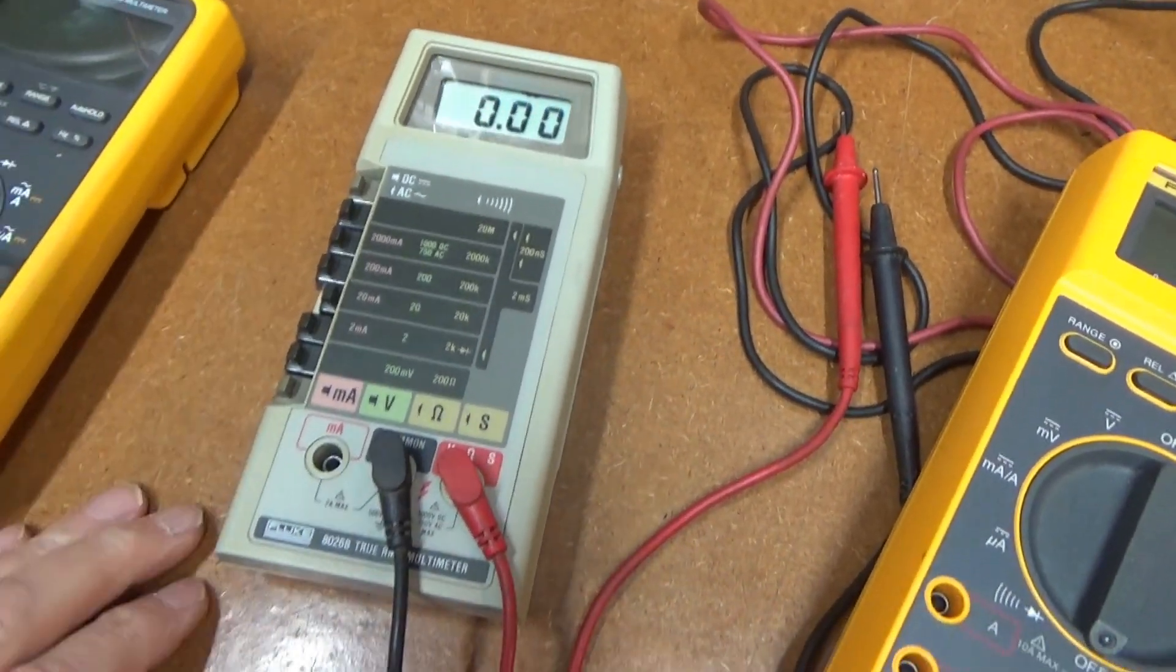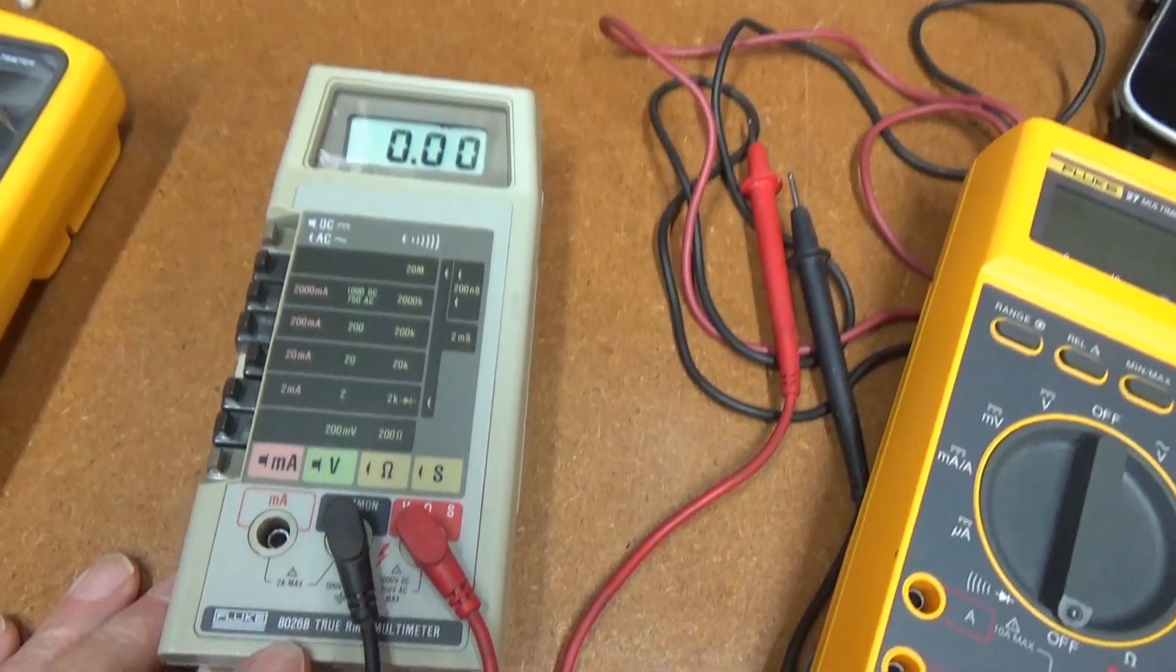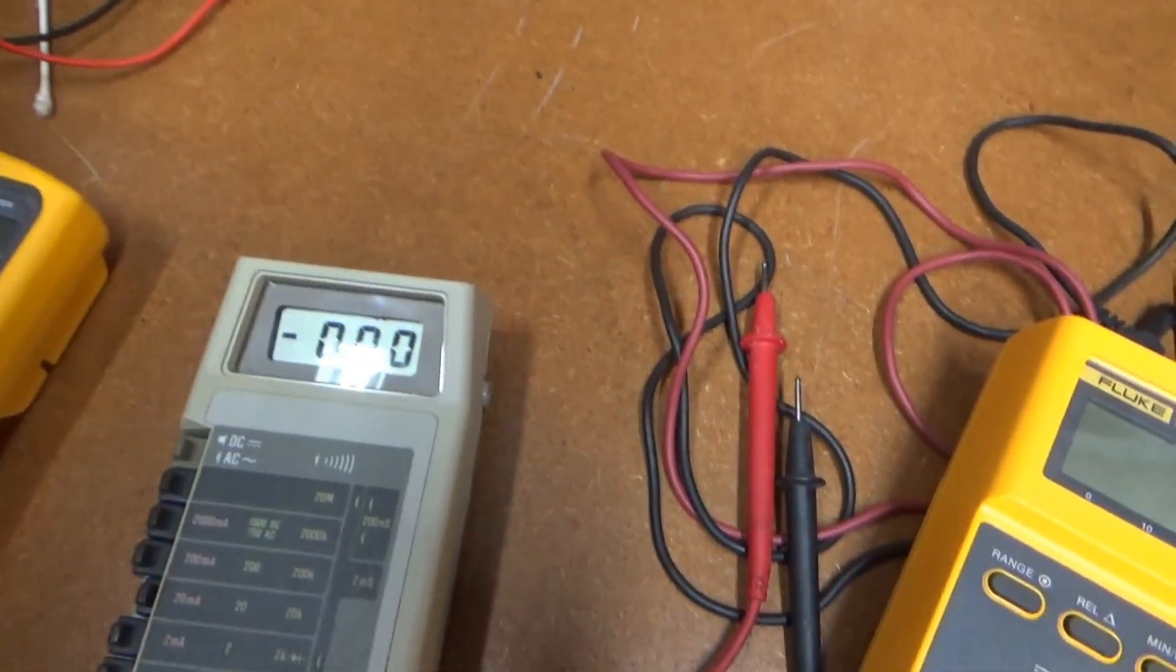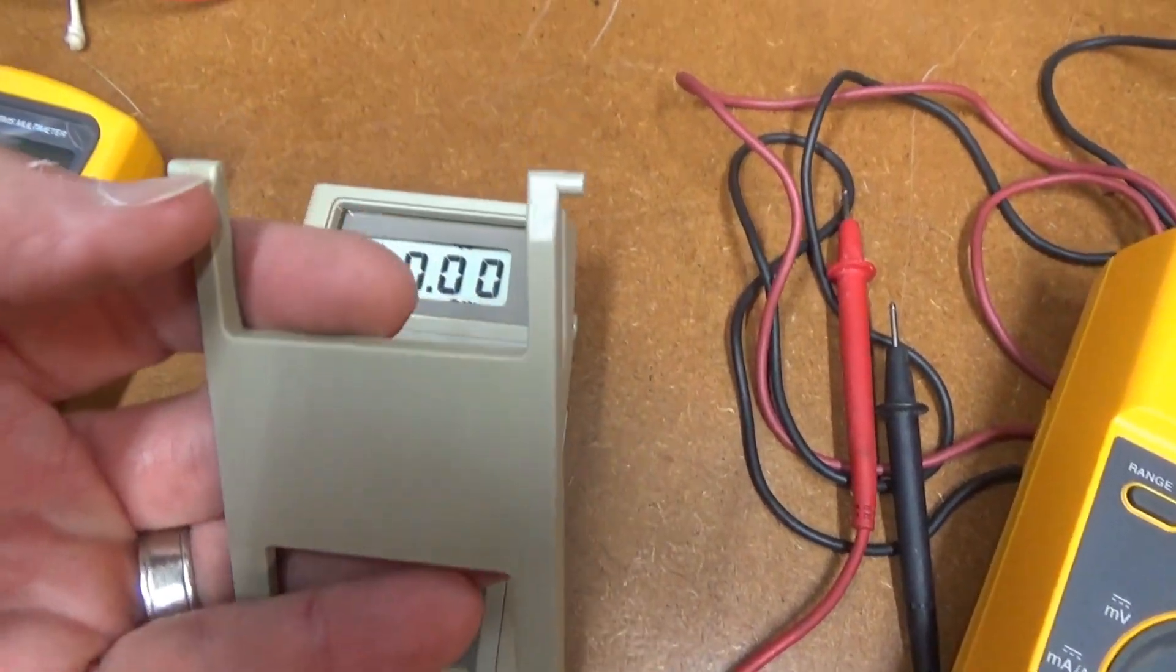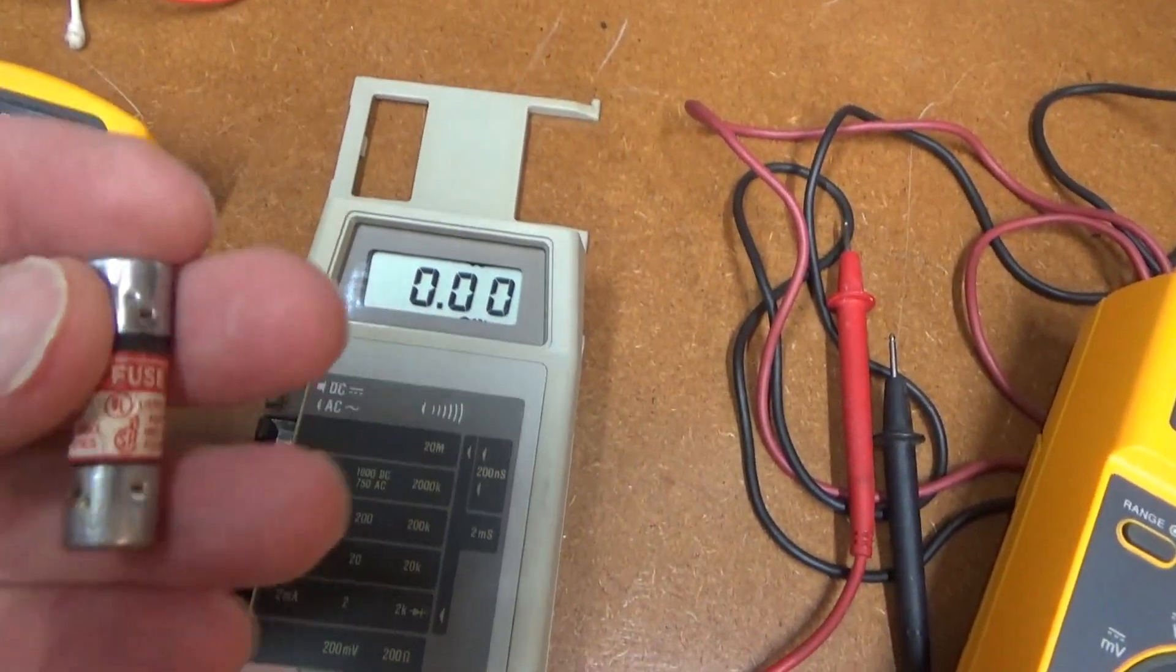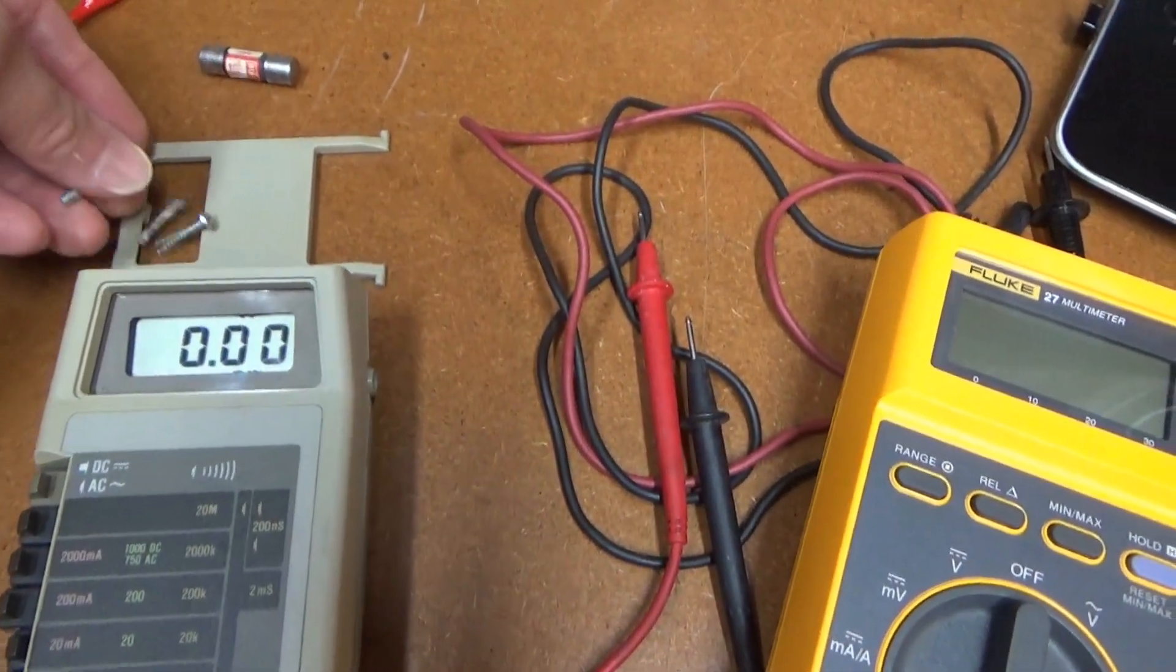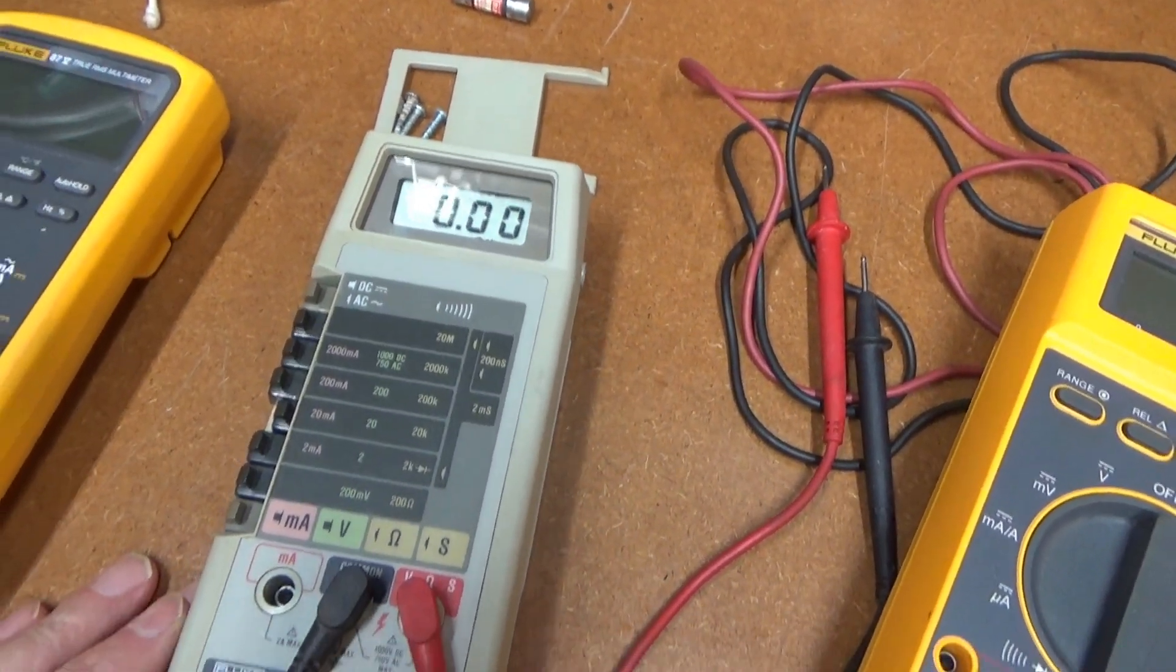I think I'll go ahead and wrap up the video here on this old Fluke 8026B from the late 80s. It is measuring very accurately and cleaned up pretty well. I had to glue this little tab on the tilt bail, it had a little crack in it, so I put a little epoxy on that, let that cure overnight. And I've got the fuses on order, it's a 3-amp fuse. So that'll come in in a few days. I'll leave the screws off the meter for now so I can get to it, because you need to take the back off to get to that fuse.